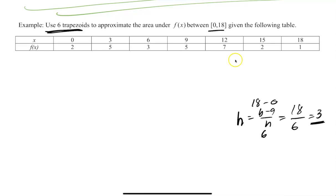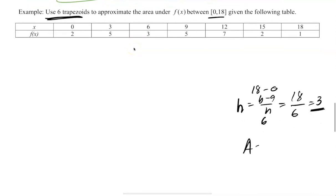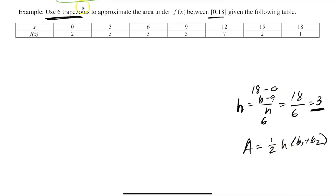The height of each trapezoid is 3, meaning each trapezoid spans 3 units along the x-axis. Don't forget: area of trapezoid = (1/2) × height × (base 1 + base 2). We'll make 6 of those, all with height 3. The x-values go 0, 3, 6, 9, 12, 15, 18. First trapezoid goes from x = 0 to x = 3.